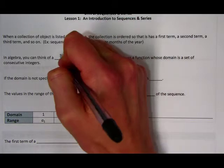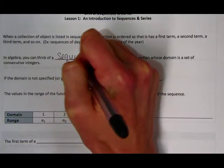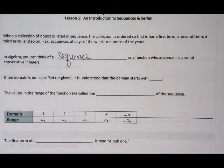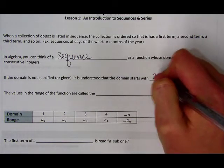In algebra, you can think of a sequence as a function whose domain is a set of consecutive integers. If your domain is not specified or given, it's understood that the domain starts with one.